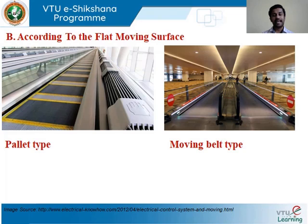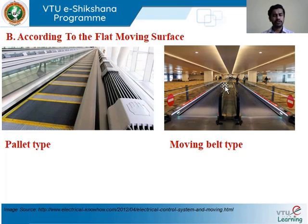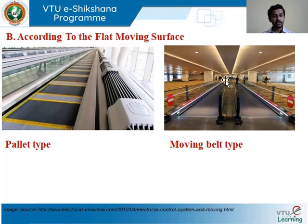Next is the moving belt type, which is more like a conveyor belt — similar to what you would have seen in industries where goods are moved from point to point. Even in construction industries, conveyor belts are used for material transportation. A similar concept is used here: you have a belt with a rubber topping on top to provide good friction when you move on it.